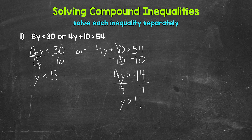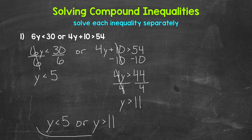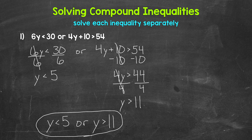Now we're done solving our two inequalities, so let's rewrite this as a compound inequality involving OR. We have y is less than 5 or y is greater than 11. Remember, when it comes to compound inequalities involving OR, they are true if either inequality is true. That means y can be anything less than 5 or anything greater than 11 — any such number is a solution of this compound inequality.